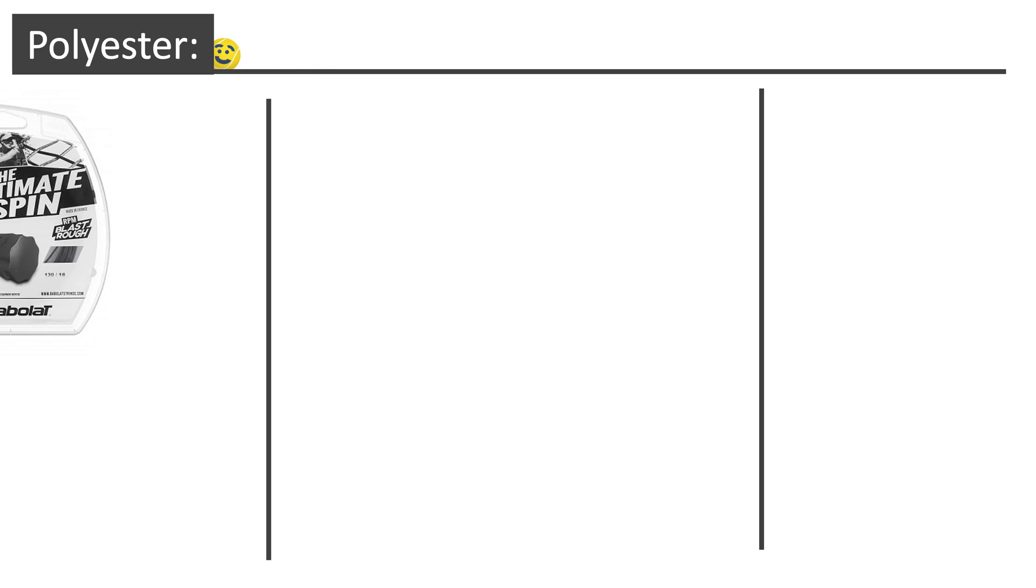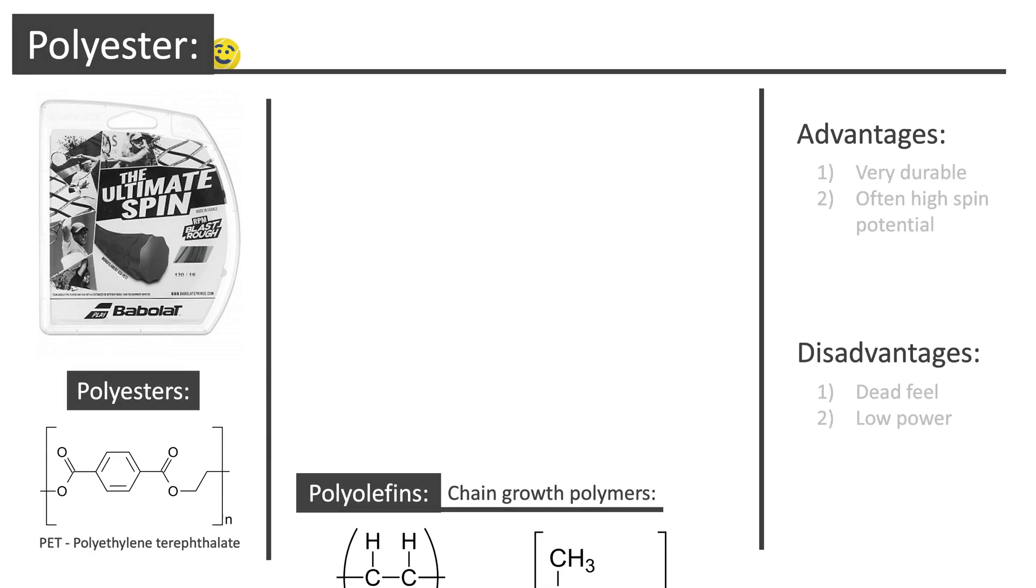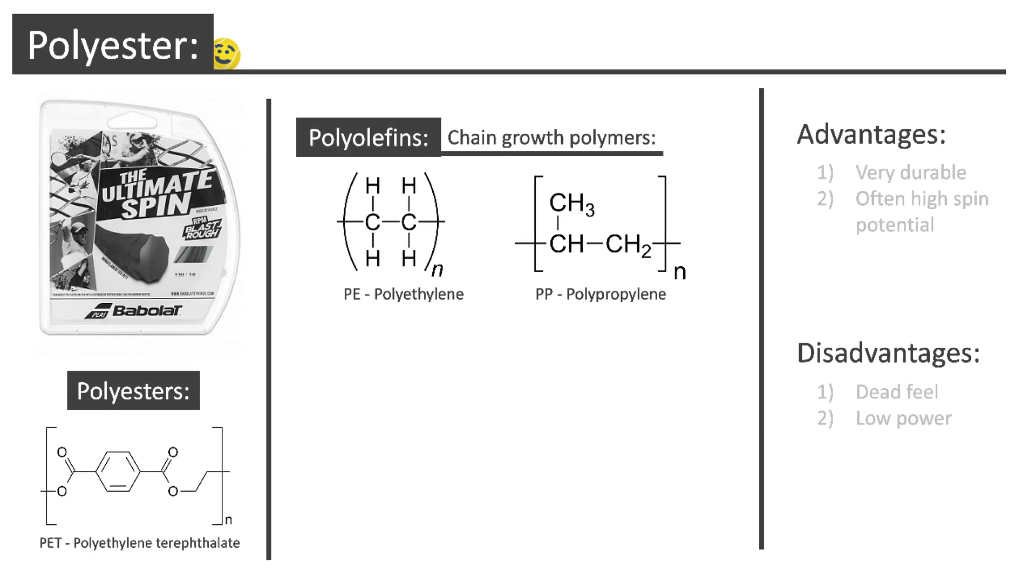Poly, or polyester strings, typically use polyesters, and therefore contain the ester functional group. Such polymers include PET, whose structure can be seen here. However, some polystrings use polyolefins, or polymers using the alkene functional group, making them chain growth polymers, as discussed earlier. Examples of these include PE and PP polymers.